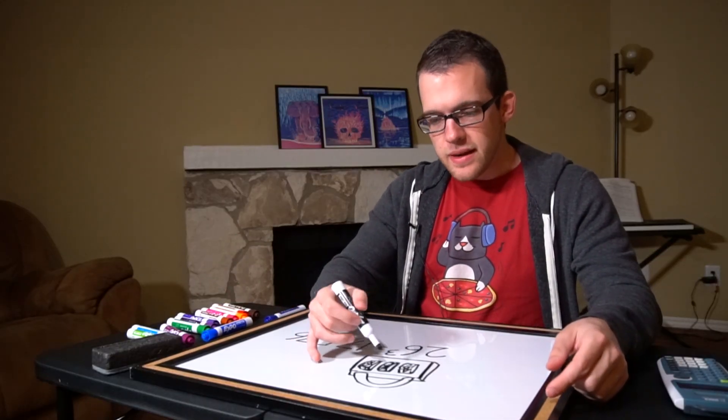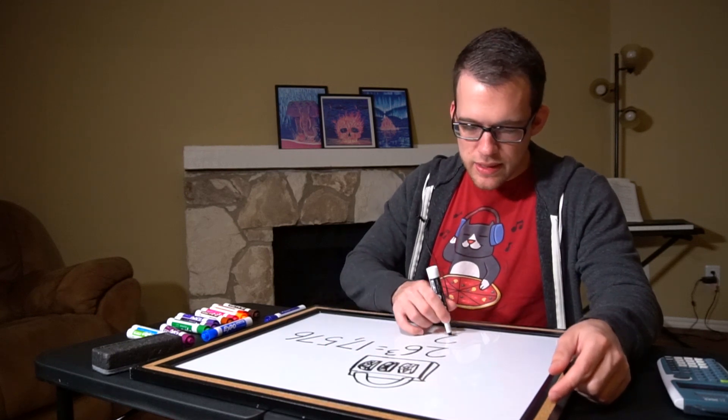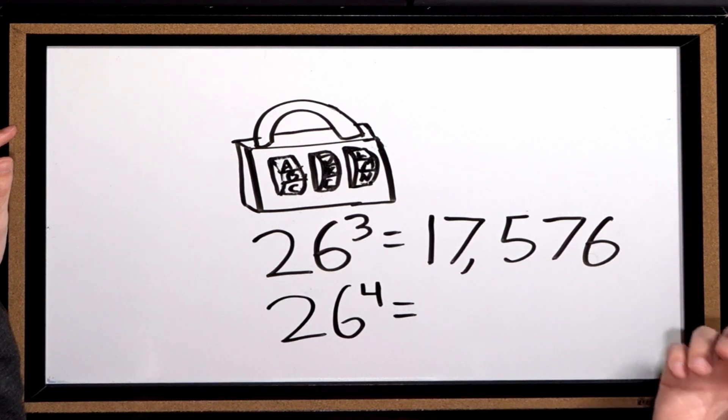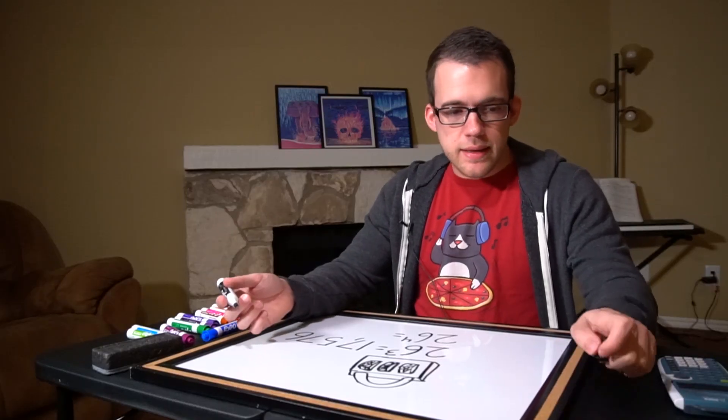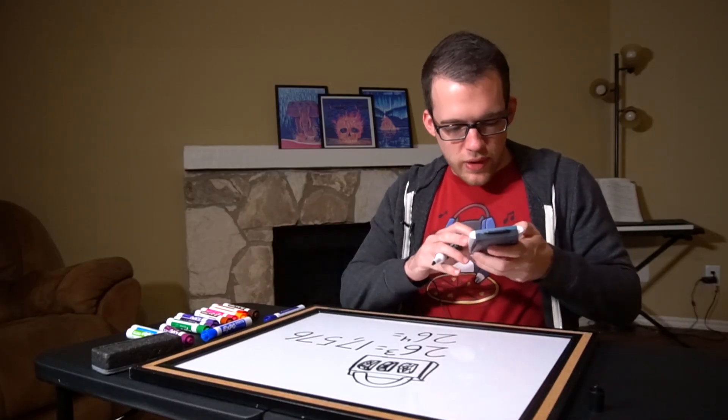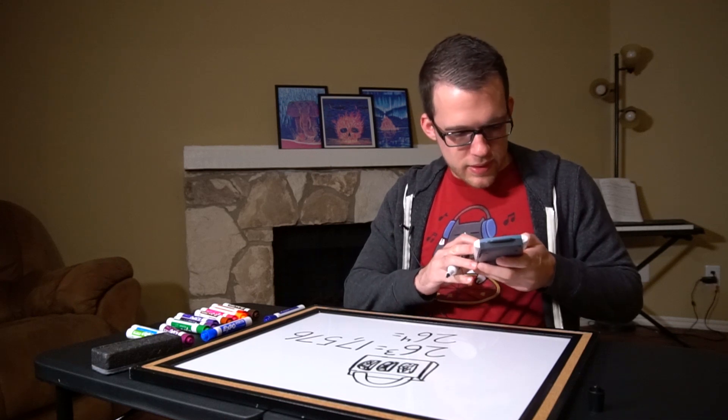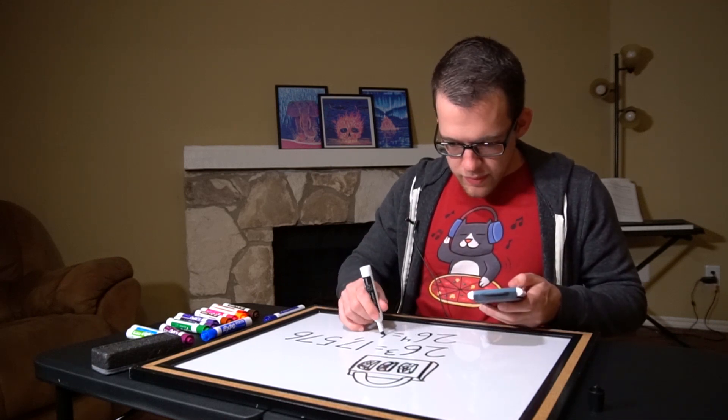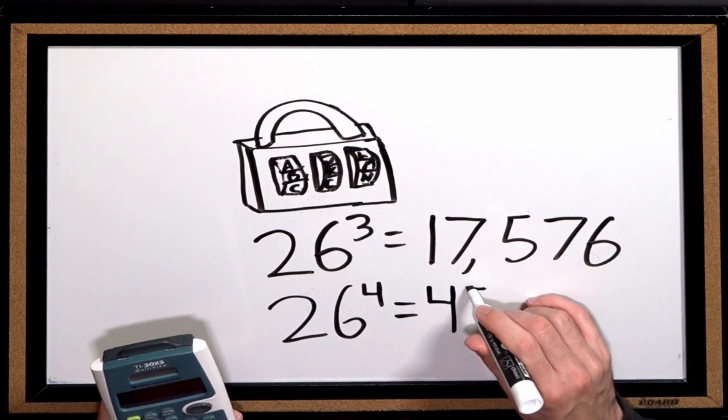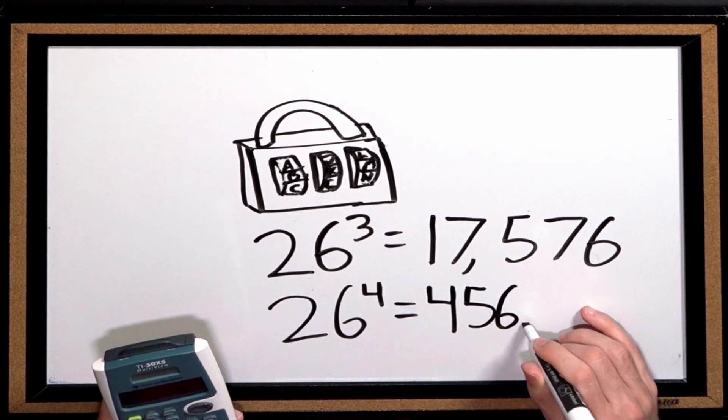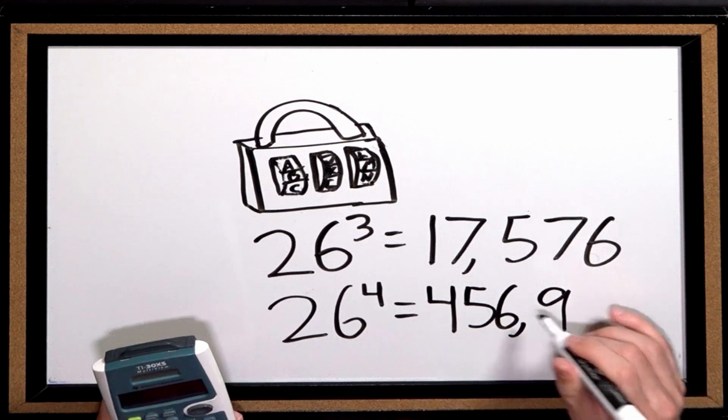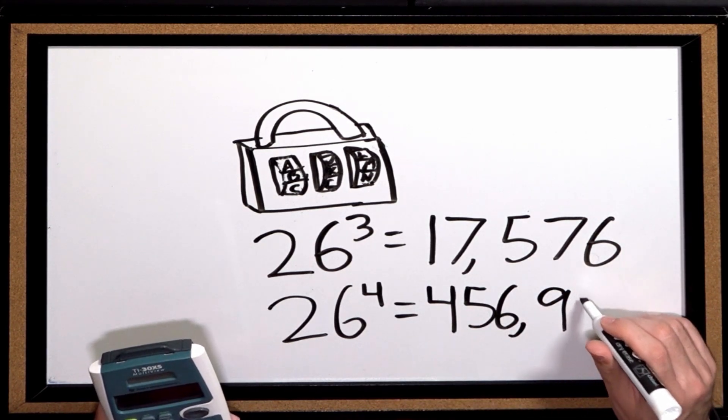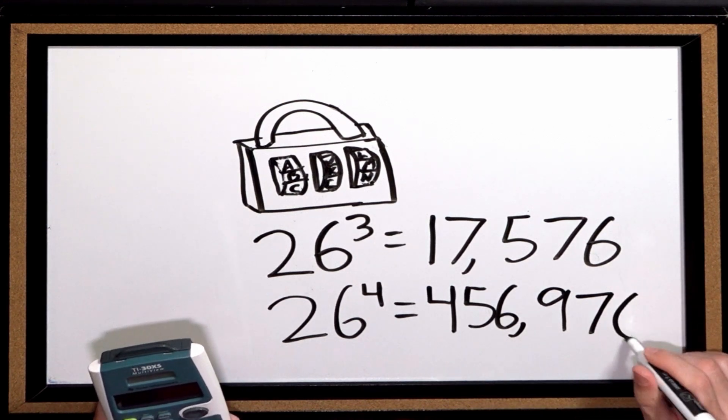If there were four spinners instead of three, we'd have 26 to the power of four. So just to show you, if I were to enter that in, 26 to the power of four, just by adding one more combination, we jumped up from about 17,000 to now we're at 456,976.